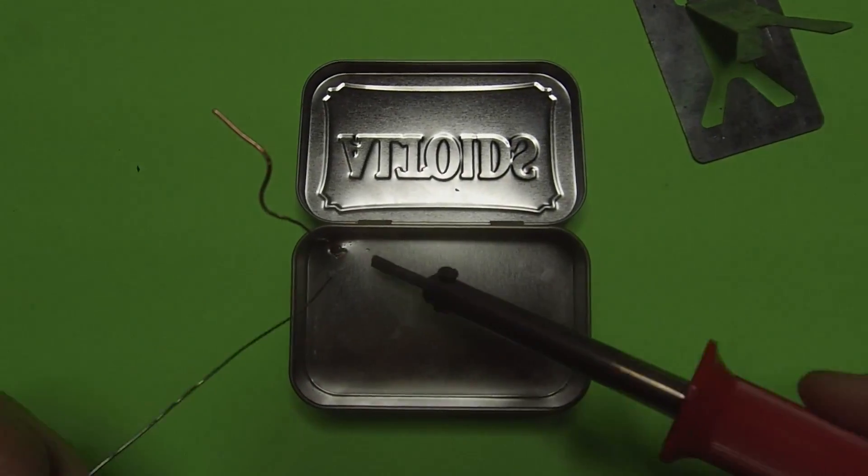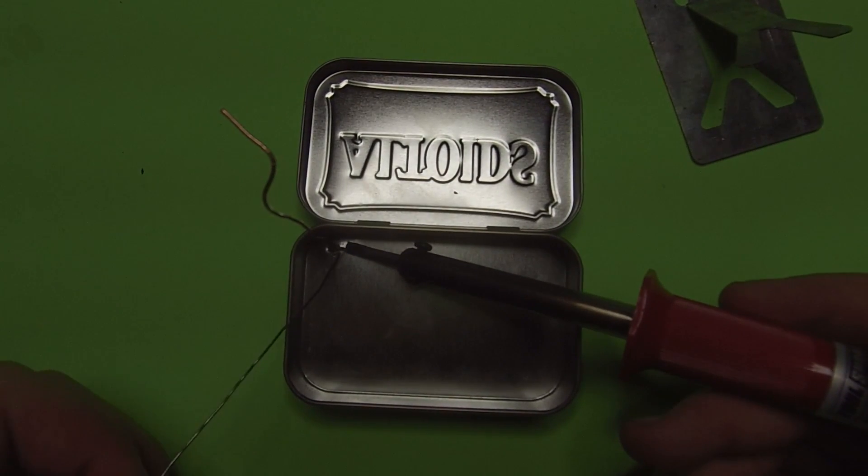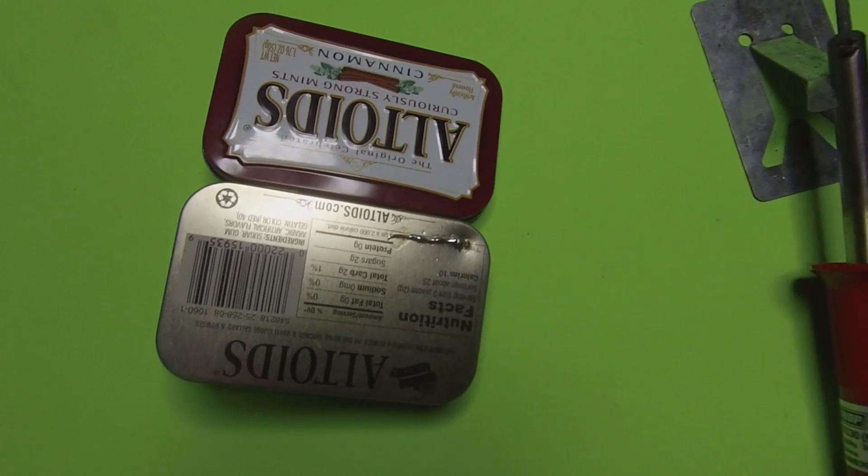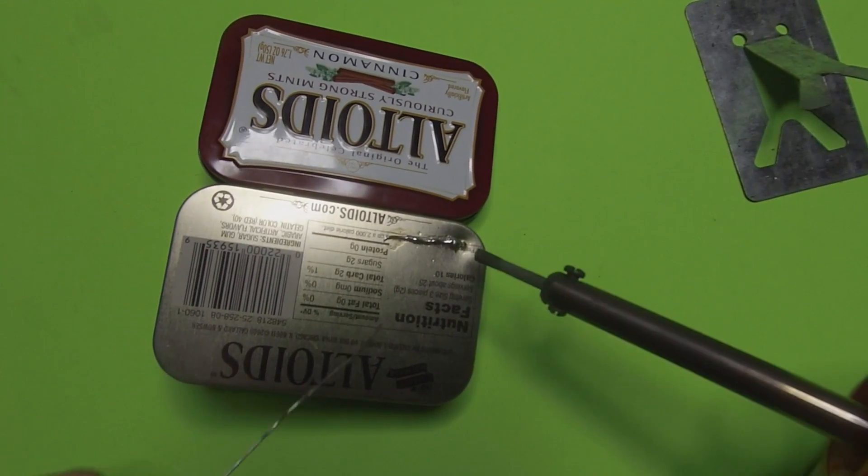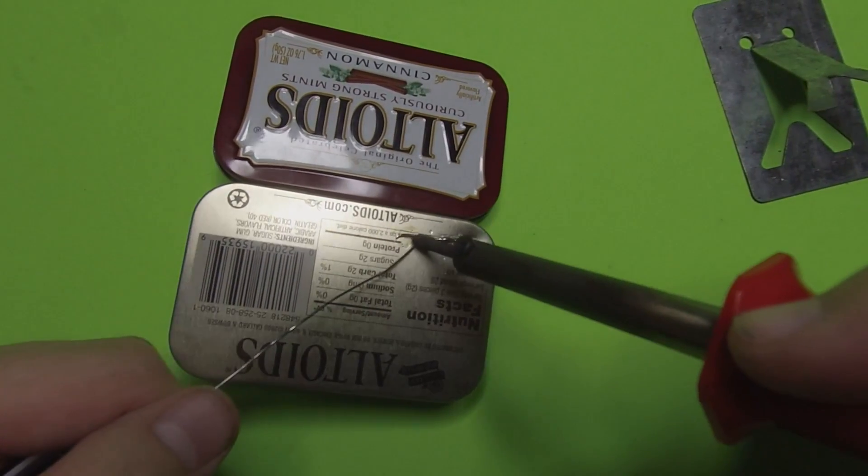Then I poked a hole in the outside of the Altoids tin and soldered my copper wire inside. This will be, like I said earlier, the post for the dish. You also have to solder around the back to ensure that it won't slide over.